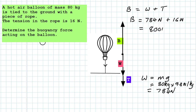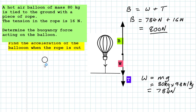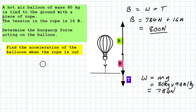So the force pushing the balloon upwards — the buoyancy force or upthrust — is 800 newtons. Now let's look at the second part of this problem: if we cut the rope and let the balloon accelerate upwards, what would be the size of the acceleration?